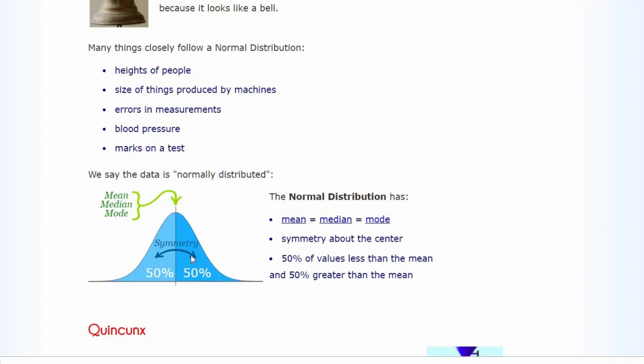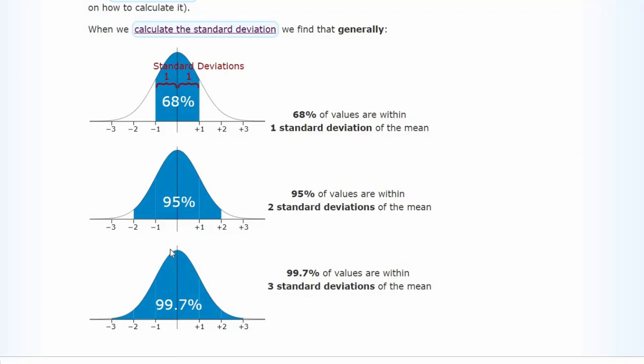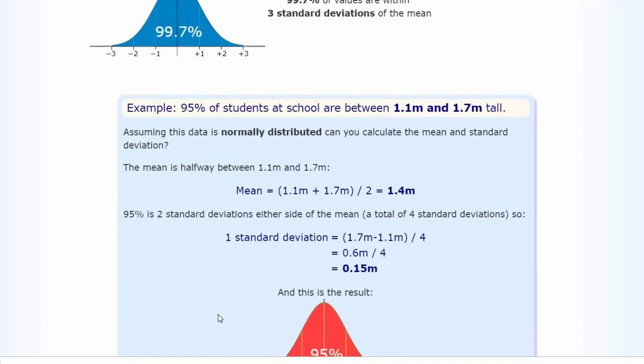As you know, standard deviation is a measure of how spread out the numbers are. If you look at this graph, from the mean, 68% of the values are centered around one standard deviation of the mean. And if you go further, 95% of the values are covered in two standard deviations, and almost 99.7% of values are covered in three standard deviations of the mean.